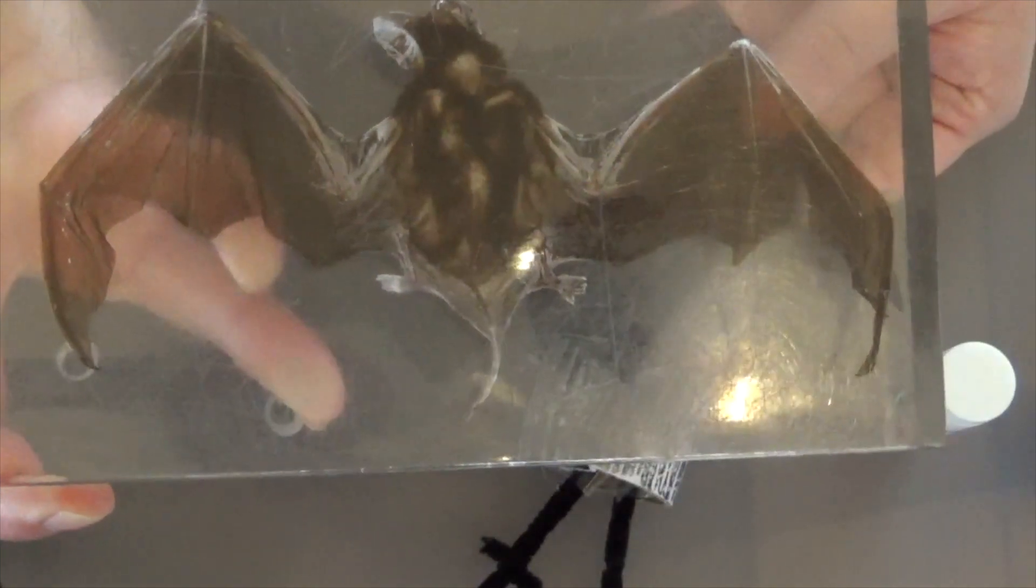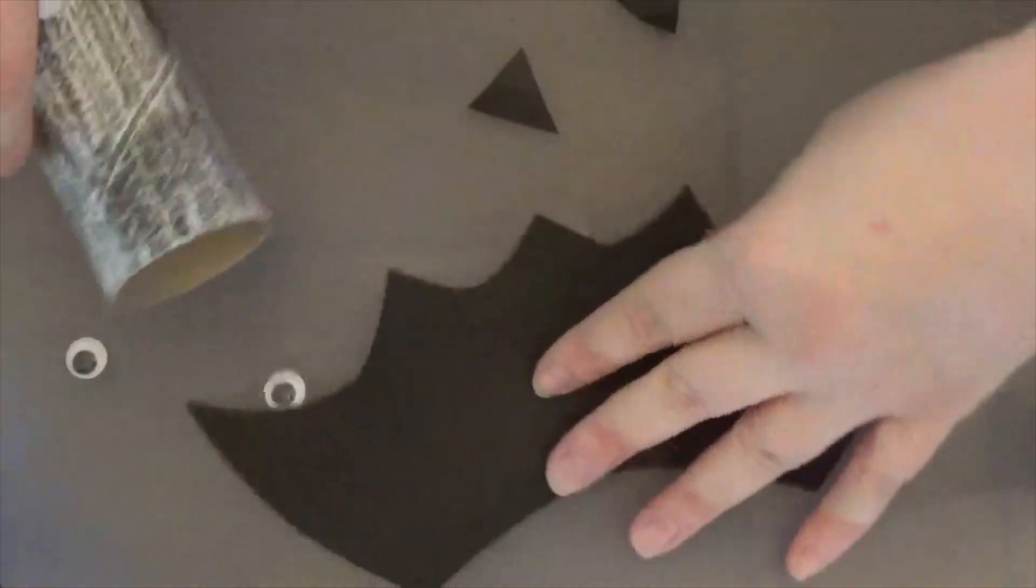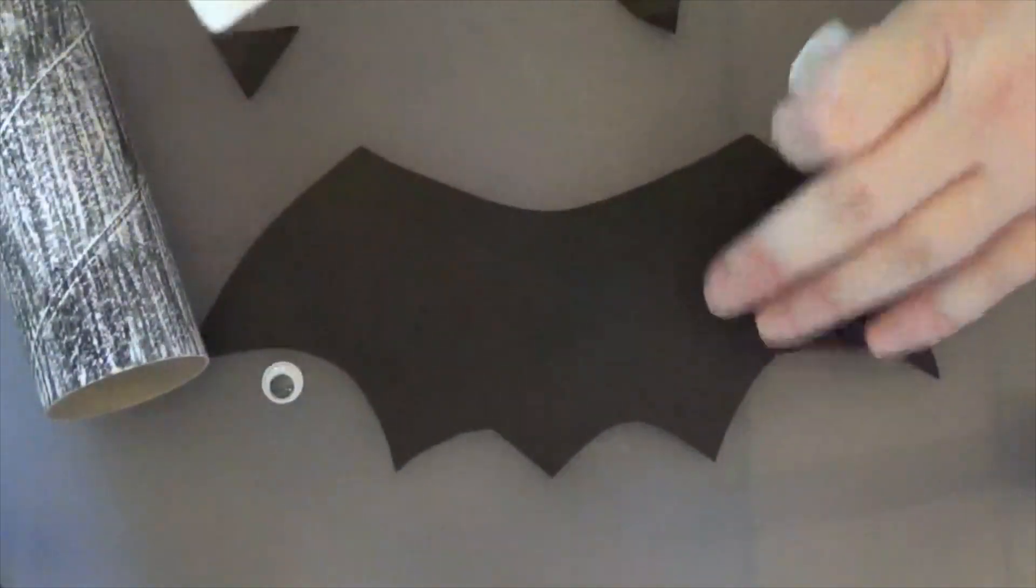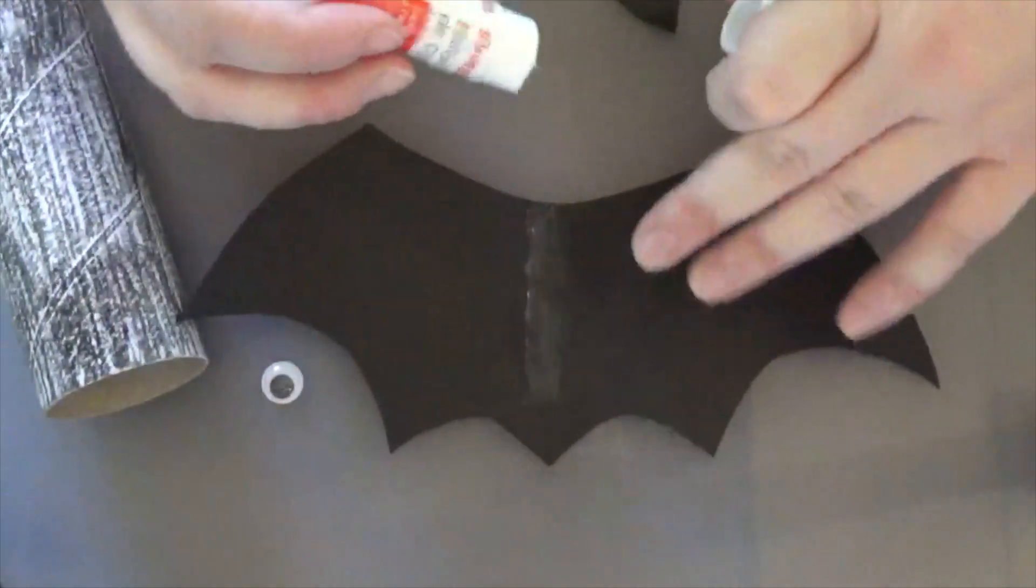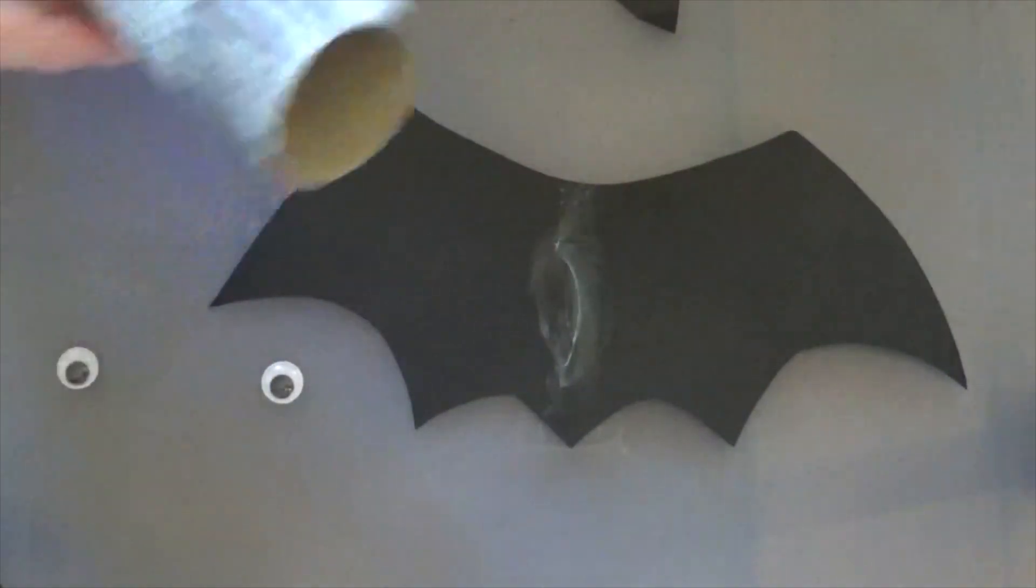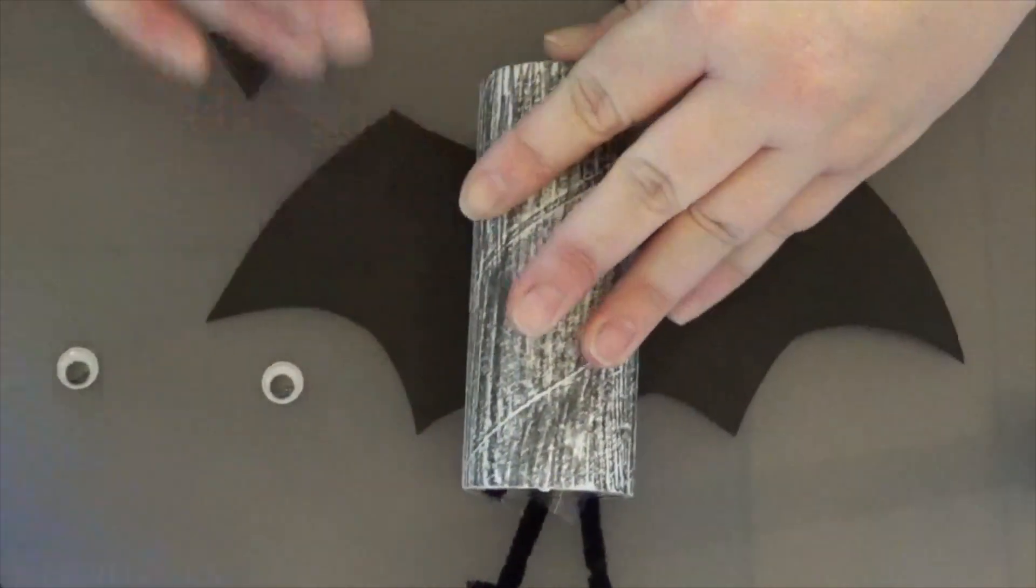See how they kind of have those little points. So I cut it out just like that. When you have cut out your little wings, you're going to put a little bit of glue in the middle like this, and then you can just glue your bat body right down just like that.